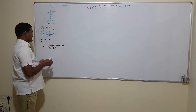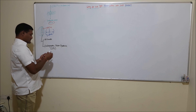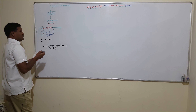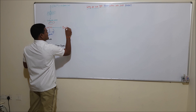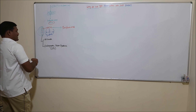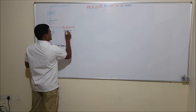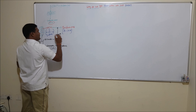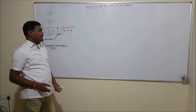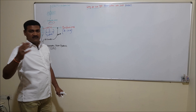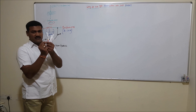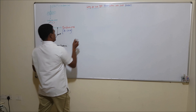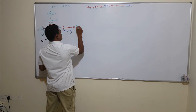The two enzymes that leak out are alliinase and lacrimatory factor synthase, abbreviated as LFS. When you cut the onion bulb, the LM compound is exposed and alliinase breaks alliin into an unstable organosulfur compound called sulfenic acid. Sulfenic acid has the formula R-S-O-H. This breaking down is done by the enzyme alliinase.